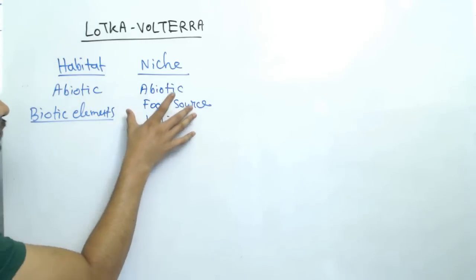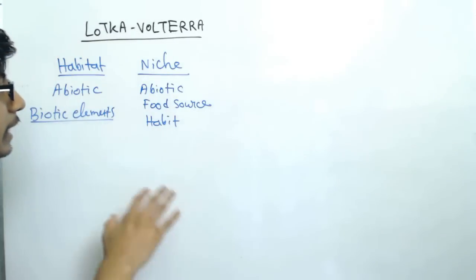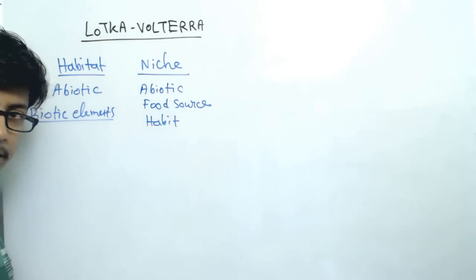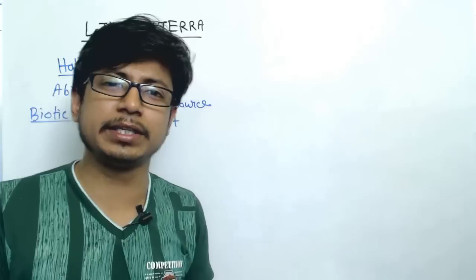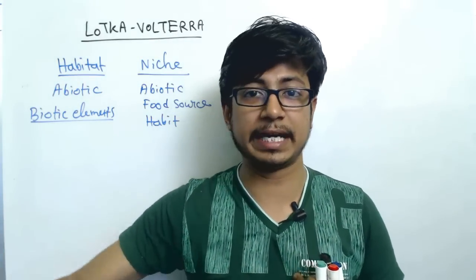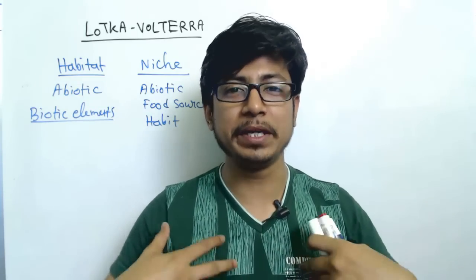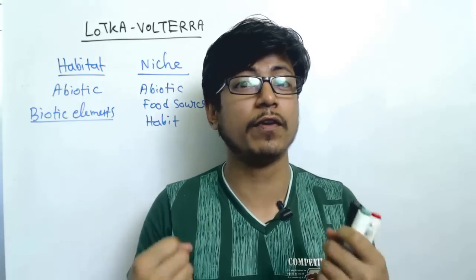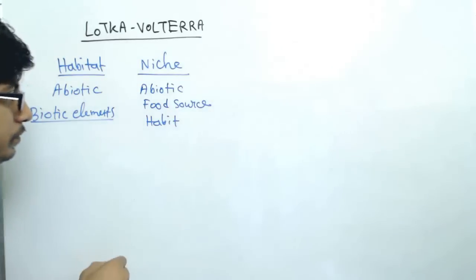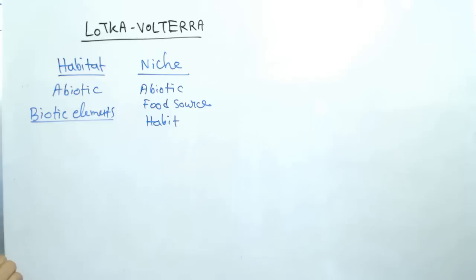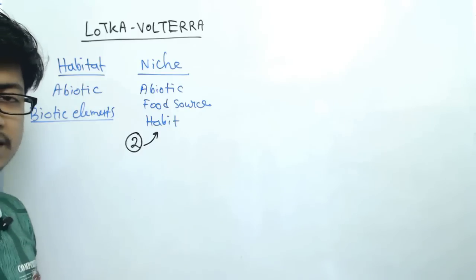The niche is the organism's functional role in the ecosystem — that includes the abiotic factors, the food that organism eats, and the other organisms that eat it. So if you consider my niche, that will be the region I live in, what I eat, what eats me, and my behavior. All those things together will be known as my functional role — that will be my niche.